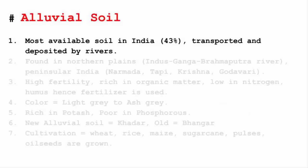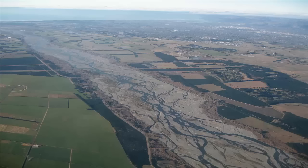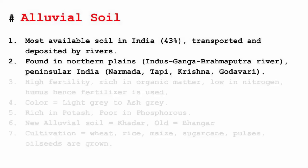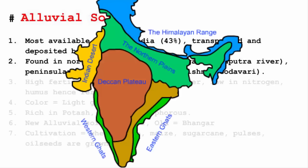Now let's read about alluvial soil. This is the most widely available soil in India. These are mostly transported and deposited by rivers. The reason behind alluvial soil is the transportation work done by rivers, hence they are found in places where rivers exist. We have rivers in the Northern Plains — the Indus, Ganga, and Brahmaputra — and rivers in Peninsular India such as the Narmada, Tapi, Krishna, and Godavari.